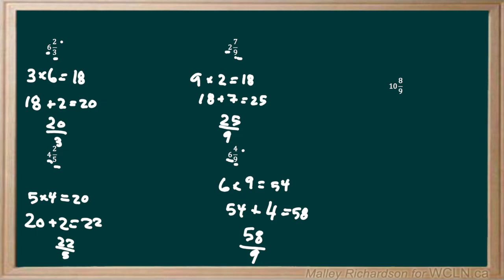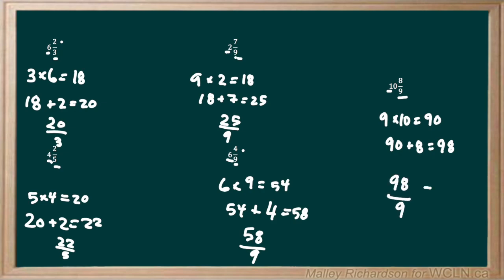Now moving on to our final question: 10 and 8 over 9. Our first step is to multiply the denominator by the whole number out front. So 9 times 10 gives us 90, and then 90 plus the numerator of 8 gives us 98. So 98 is our new numerator and we keep the same denominator of 9, leaving us with 98 over 9. The numerator is greater than the denominator, so 98 over 9 makes sense as our final answer.